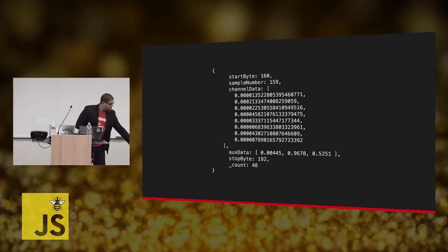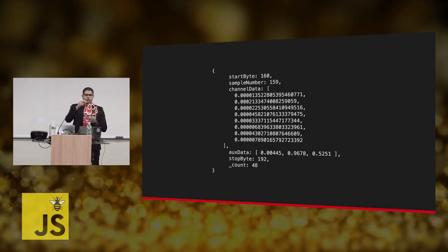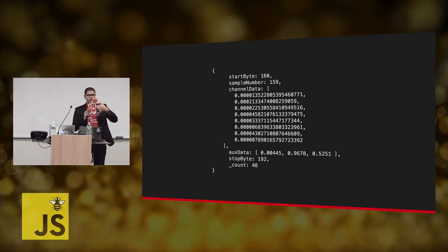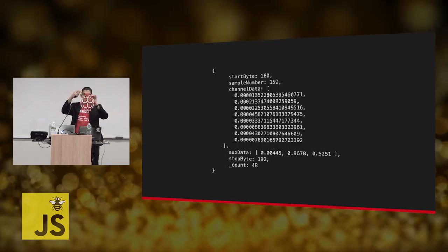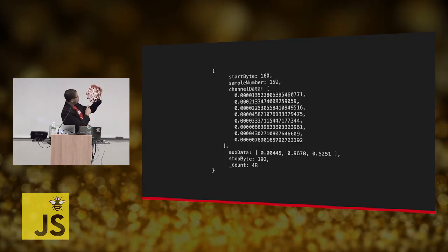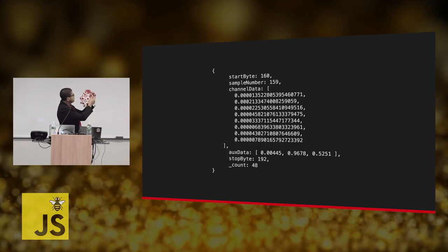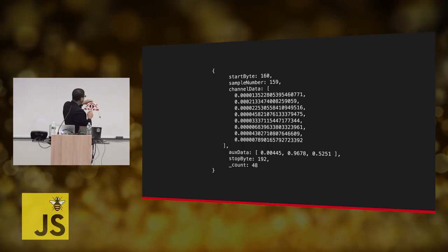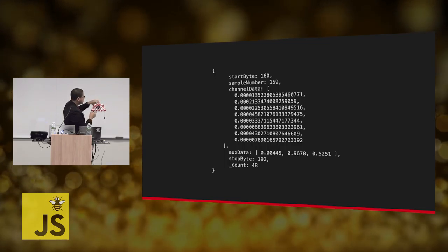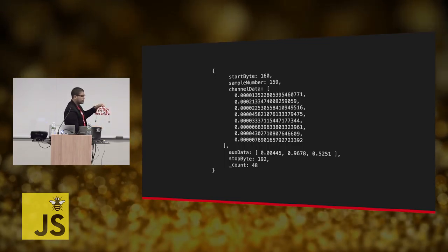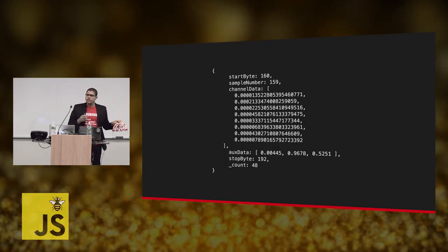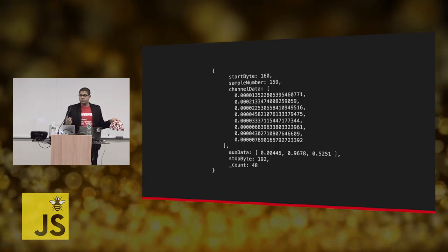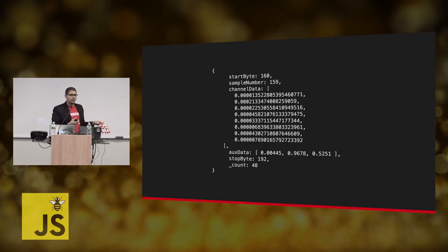The way these electrodes are placed is using the 10-20 grid. You can see how we have channels one through eight, where the left side of the interface has the odd numbers and the right side has the even numbers. This is very important to have in mind because sometimes you're going to see how there's more activity in one hemisphere of the brain versus the other, which actually helps a lot for research purposes.